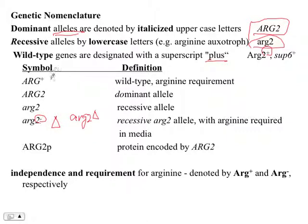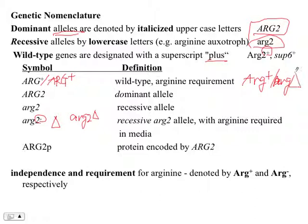If the symbol shows a slash, the cell is diploid. So arg+ / arg+ would be homozygous wild type; arg+ / arg- would be heterozygous; and arg+ / delta-arg would be a heterozygous deletion. Sometimes a capital 'P' is used to indicate a protein, though that convention has become less common and some reviewers now ask to have it removed.